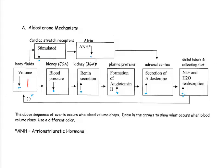If body fluid volume increases due to over-hydration, for example drinking a lot of fluids, this causes two different things. It will cause blood pressure to rise, and the kidney notes that, causing renin secretion to drop, which leads to less angiotensin 2 formation in the plasma and less secretion of aldosterone at the adrenal cortex. This causes less sodium and water reabsorption at the distal tubules, correcting the situation of too high body fluid volume because more fluid will leave the body through the collecting ducts.